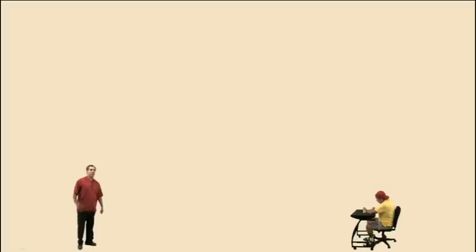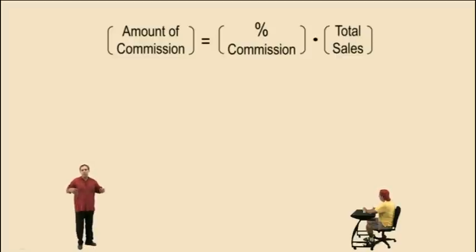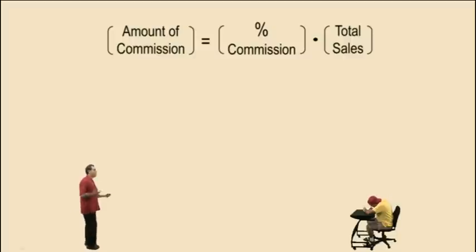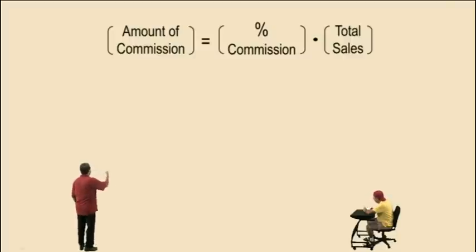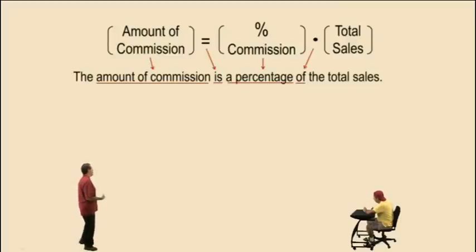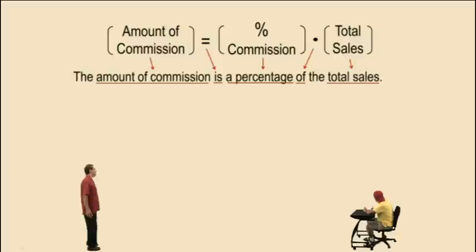Now let's look at commission problems. Again, keeping our general structure: to calculate the amount of commission, you simply multiply the percent commission times the total sales. The amount of commission is a percentage of the total sales — portion equals percent times total. Now let's put this one to work.